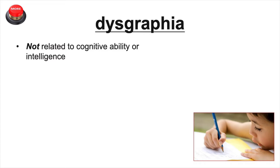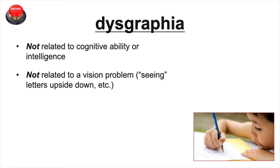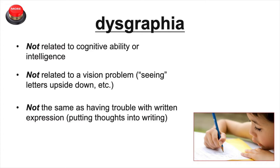Dysgraphia is not related to a student's cognitive ability or intelligence, and it is not related to or caused by a vision problem. Dysgraphia technically refers to just the physical difficulty with transcription — that physical part of writing.